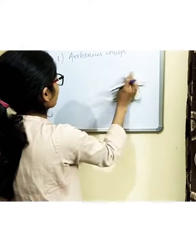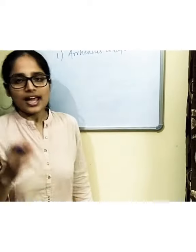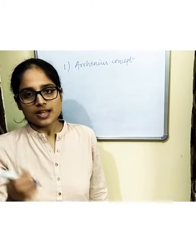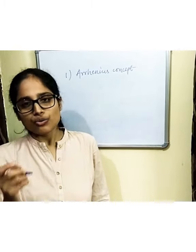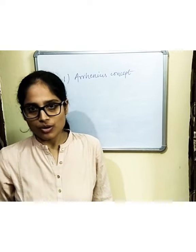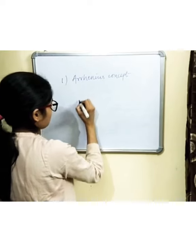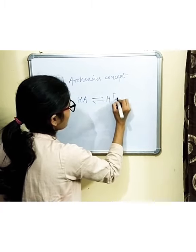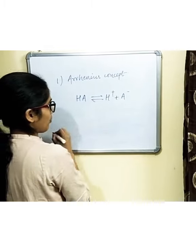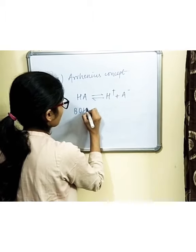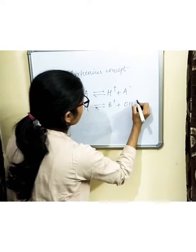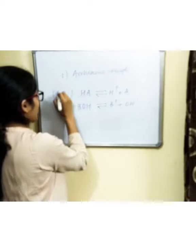First, the Arrhenius concept. According to this concept, an acid is a substance that gives H+ ions when dissolved in water, whereas a base is a substance which gives hydroxyl or OH- ions when dissolved in water. So an acid ionizes to form H+ and A- ions in water, whereas a base ionizes to form hydroxyl ions in water.